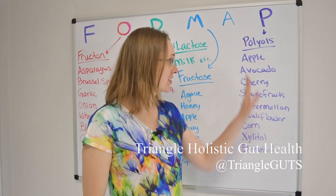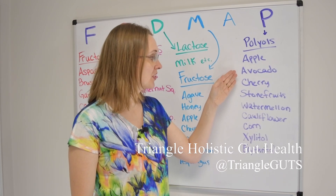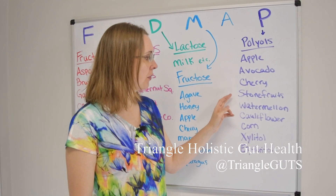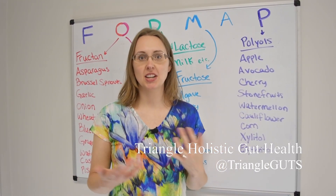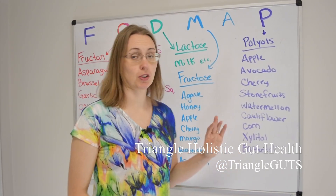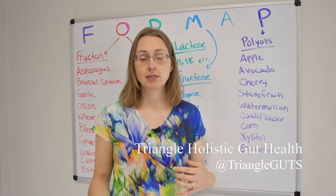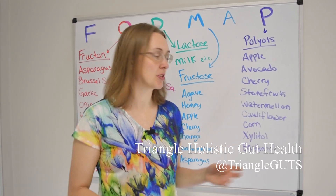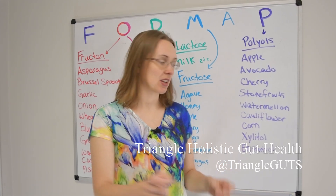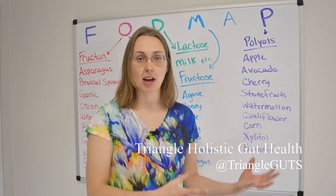Finally, we come to the polyols — the P in FODMAP — and we've got a lot of big ones here. We've got apples and avocados; cherries and apples actually make two categories each. Stone fruits — things like peaches, plums, nectarines, and apricots — are all polyols. Watermelon, cauliflower, and sweet corn on the cob also make the polyol list. And finally, some artificial sweeteners ending in -ol, like mannitol, xylitol, and erythritol, are all polyol FODMAPs.